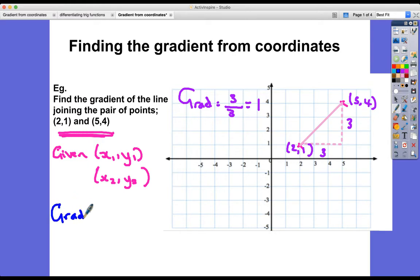So the gradient, and this is worth writing down because it's really important, y2 minus y1. So if we take the second y coordinate and subtract the first y coordinate, in this case, it was 4 subtract 1, which gave us 3. And then we divide it by the second x coordinate subtracts the first x coordinate. And that will always give us the gradient.